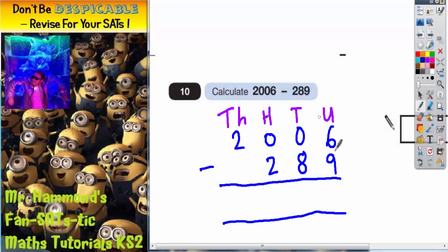We start with the units, so six take away nine we can't do, so we need to borrow one. Now we can't actually borrow one from the zero, so we need to go to the next column. We can't borrow from this zero either, so we actually need to borrow from the thousands column. So they've been really sneaky here because you've got to jump across two columns to borrow from the thousands.